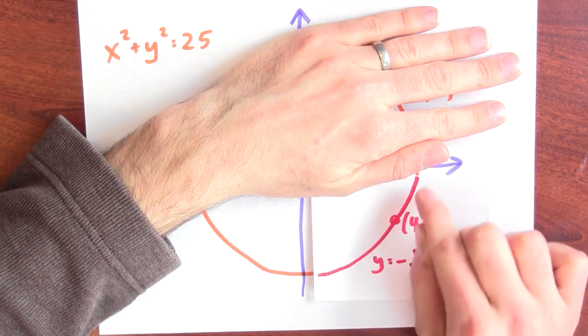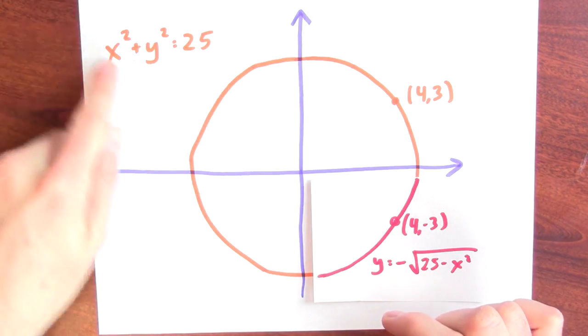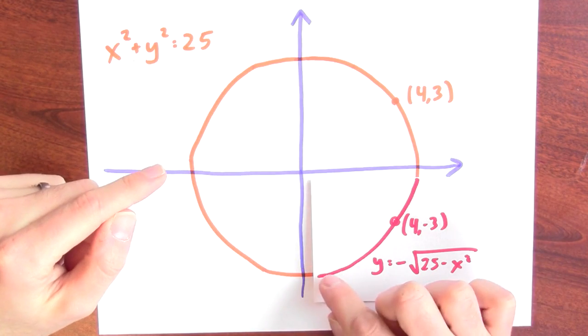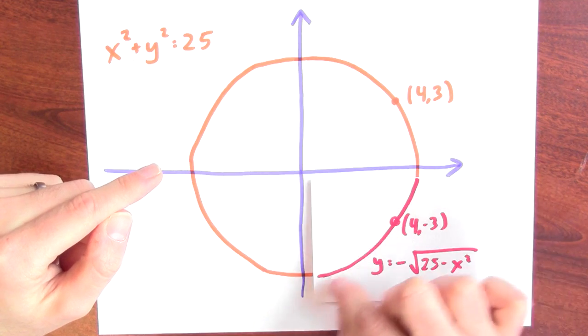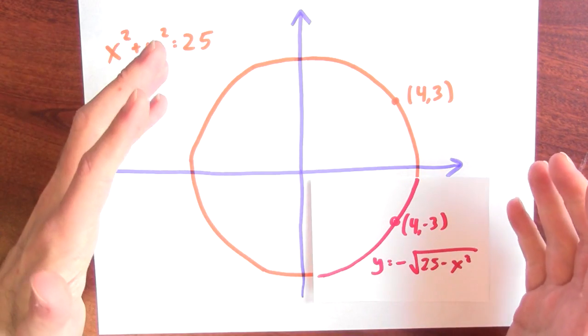This function is picking out a piece of the curve given by this equation, which is only valid near the point 4 comma minus 3, but maybe that's all I care about for the time being.